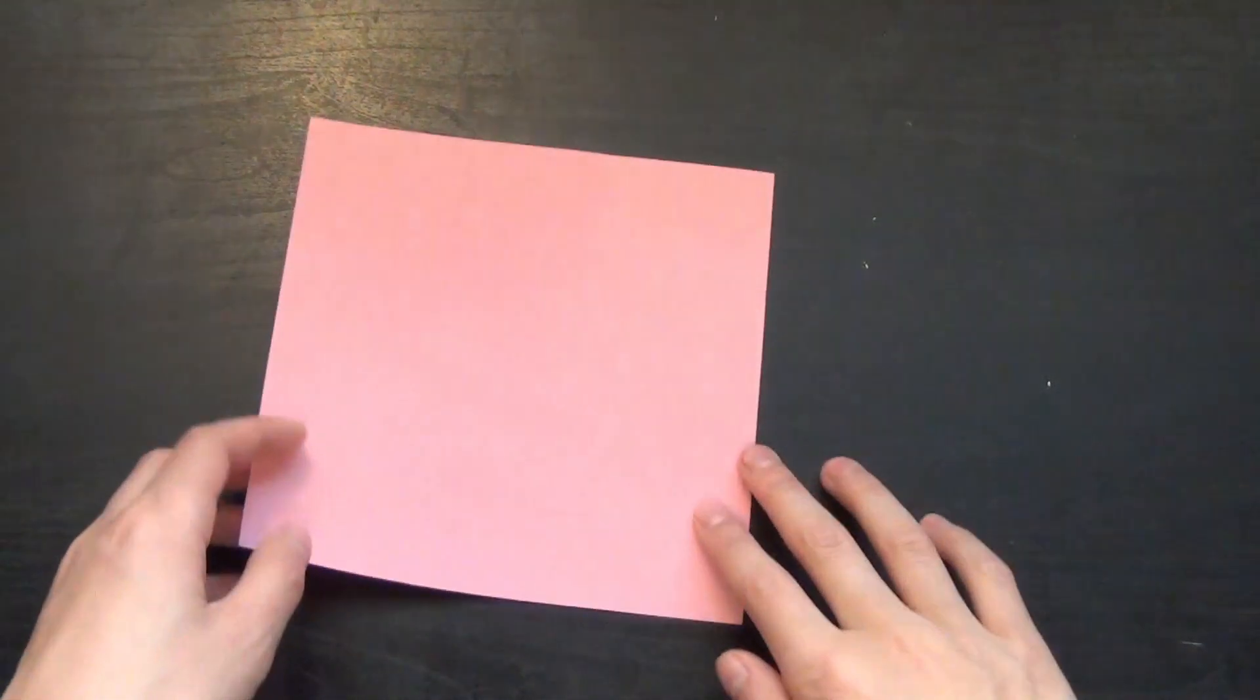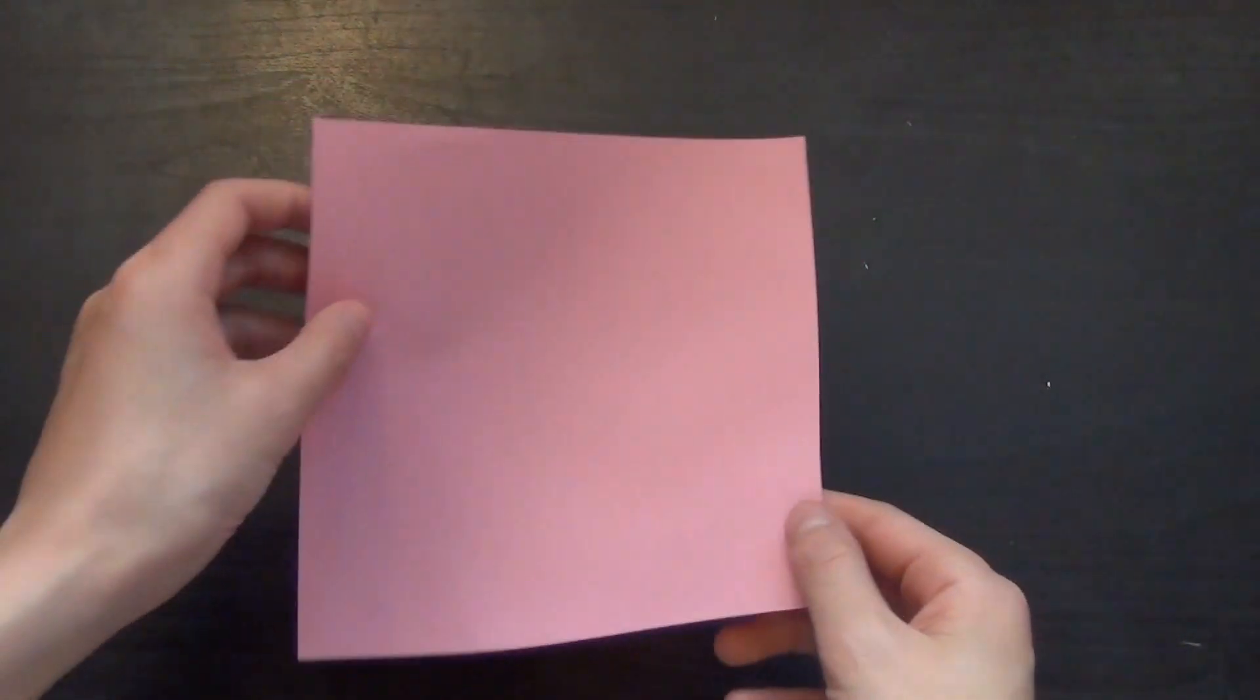To make it, you'll need a square piece of paper. The first step is to fold one corner to the opposite corner.